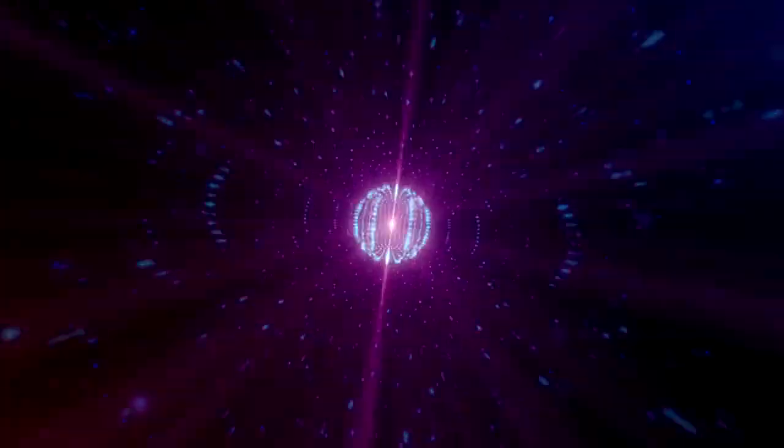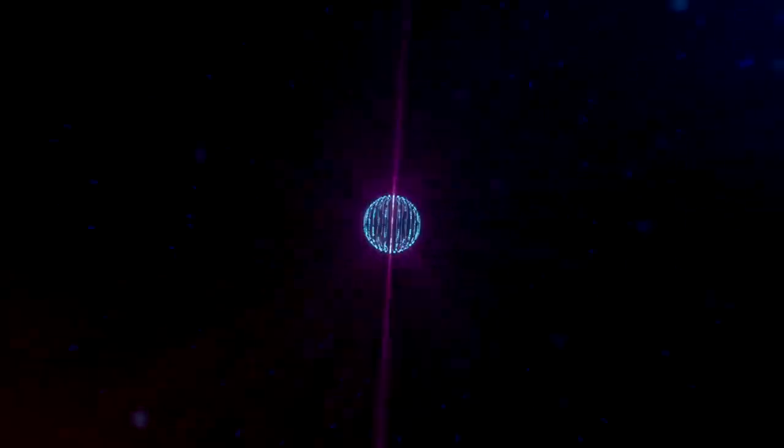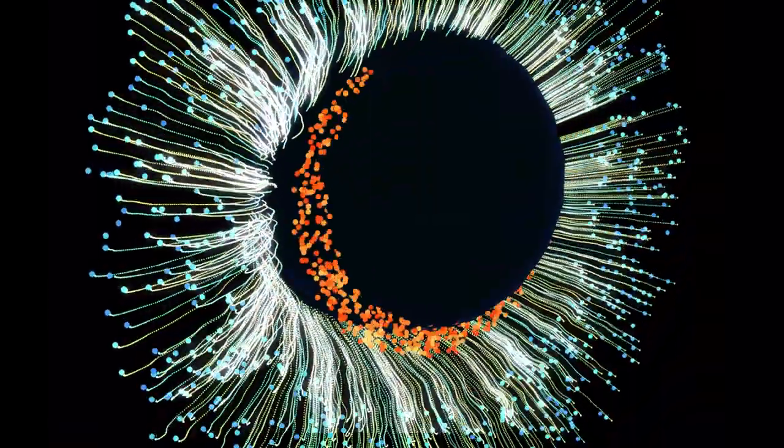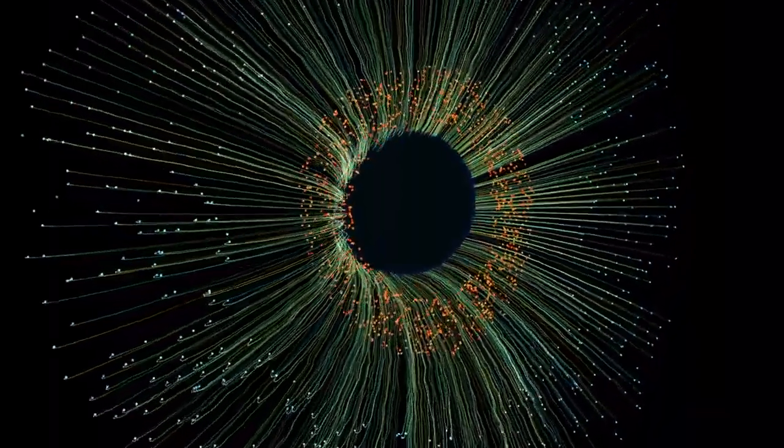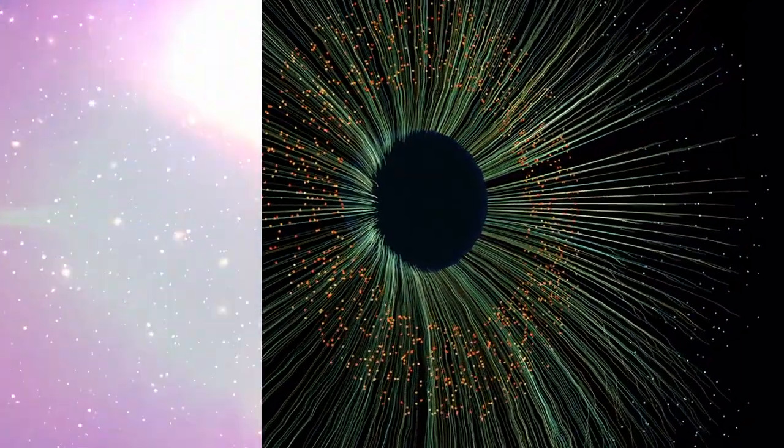A supernova occurs when a massive star reaches the end of its life cycle, collapsing under its own gravity and releasing an enormous amount of energy in the process. This explosion is so powerful that it can briefly outshine an entire galaxy, releasing more energy in a few seconds than our sun will in its entire 10 billion year lifespan.